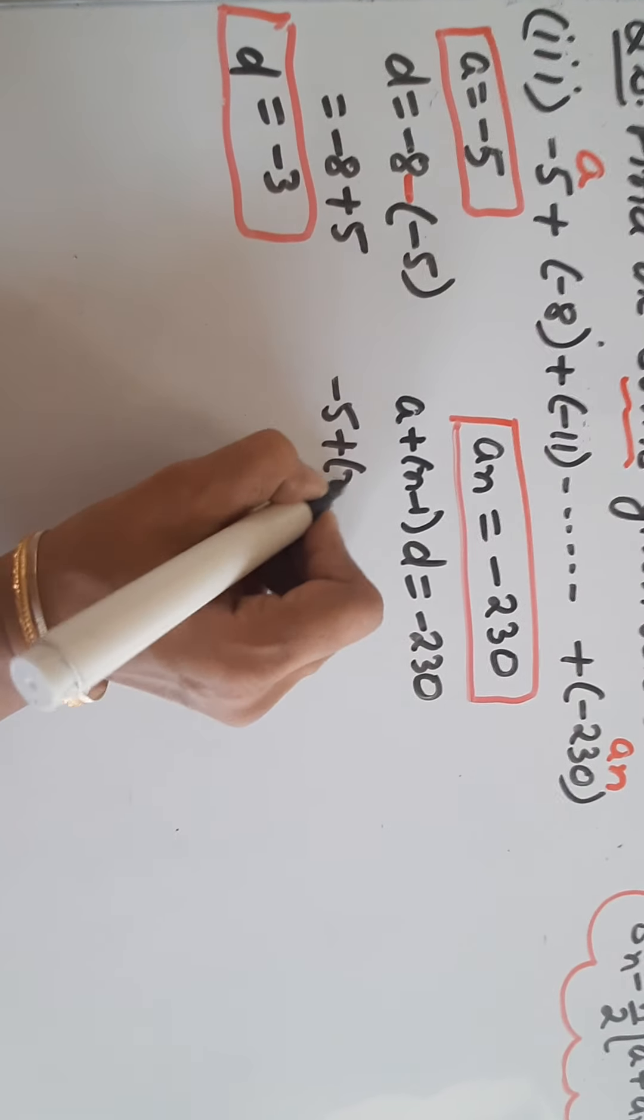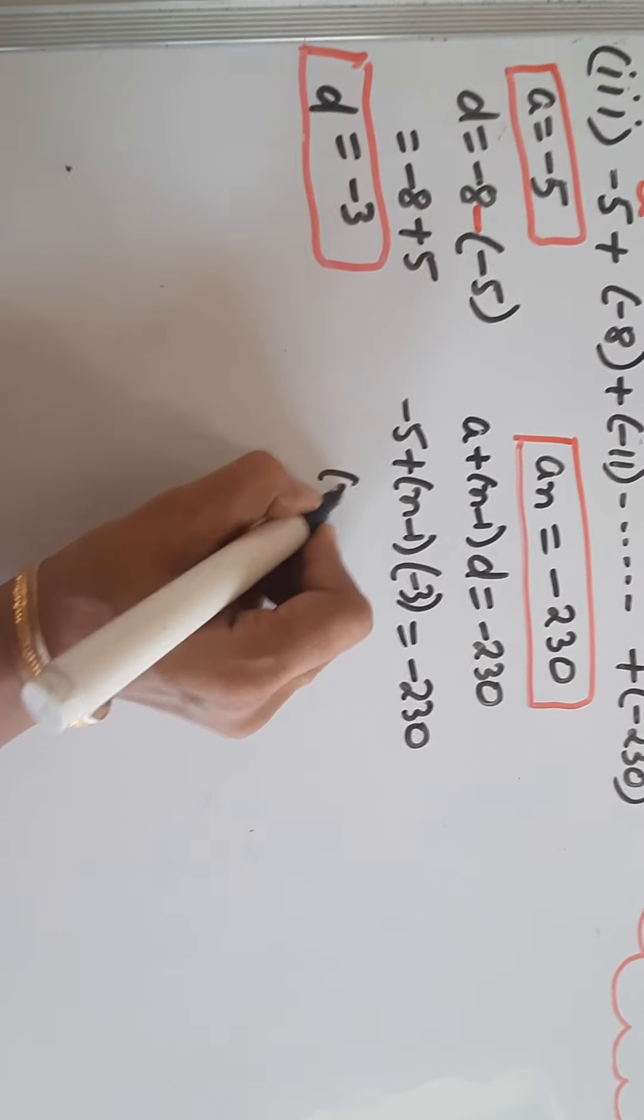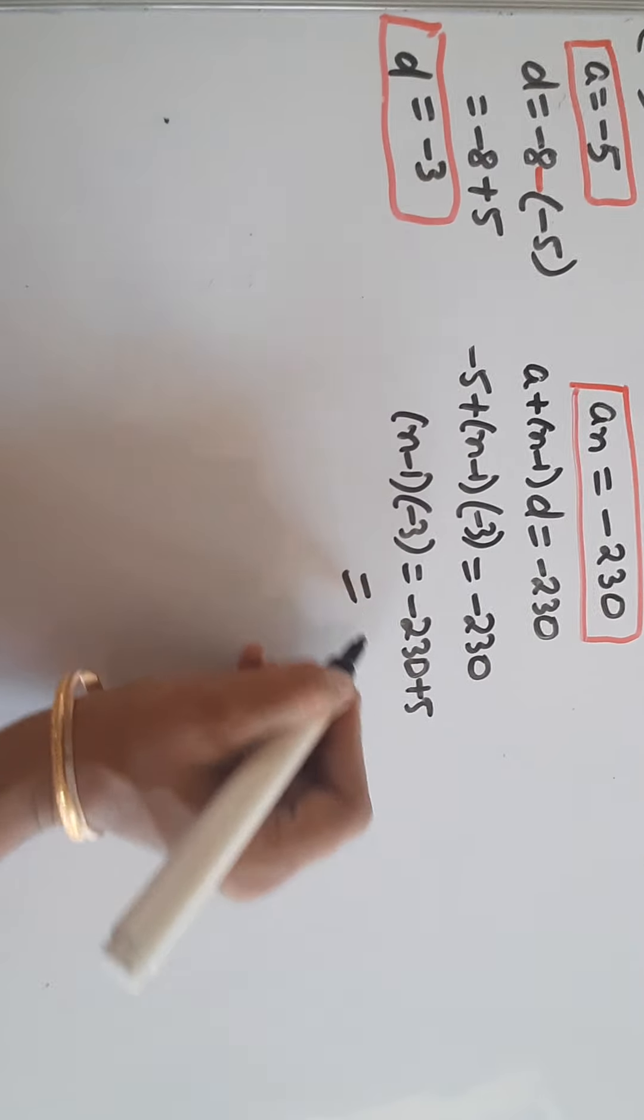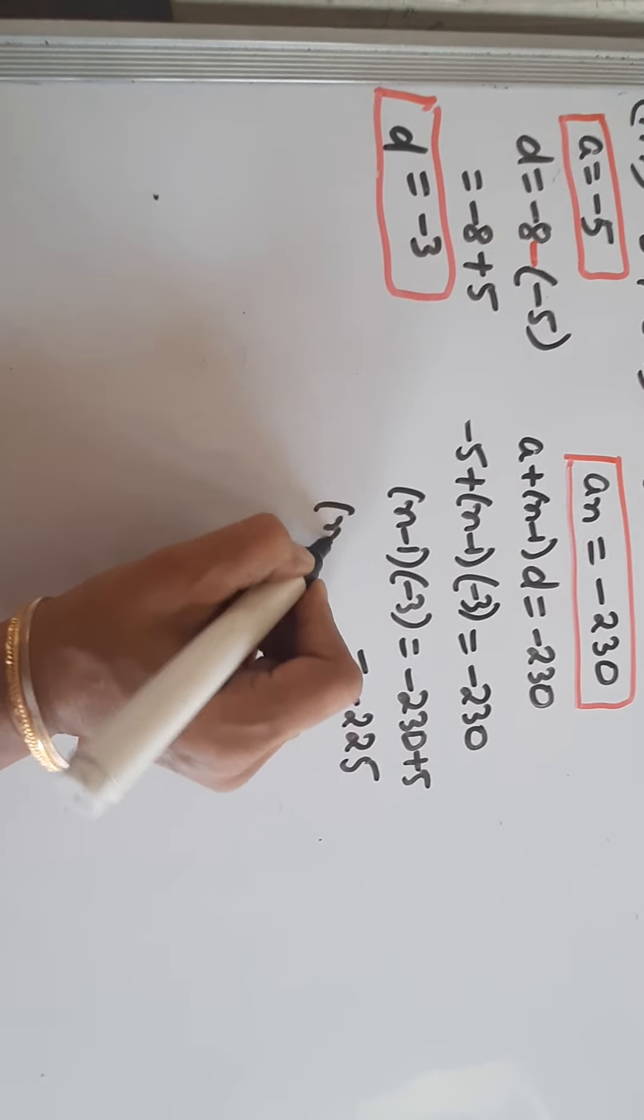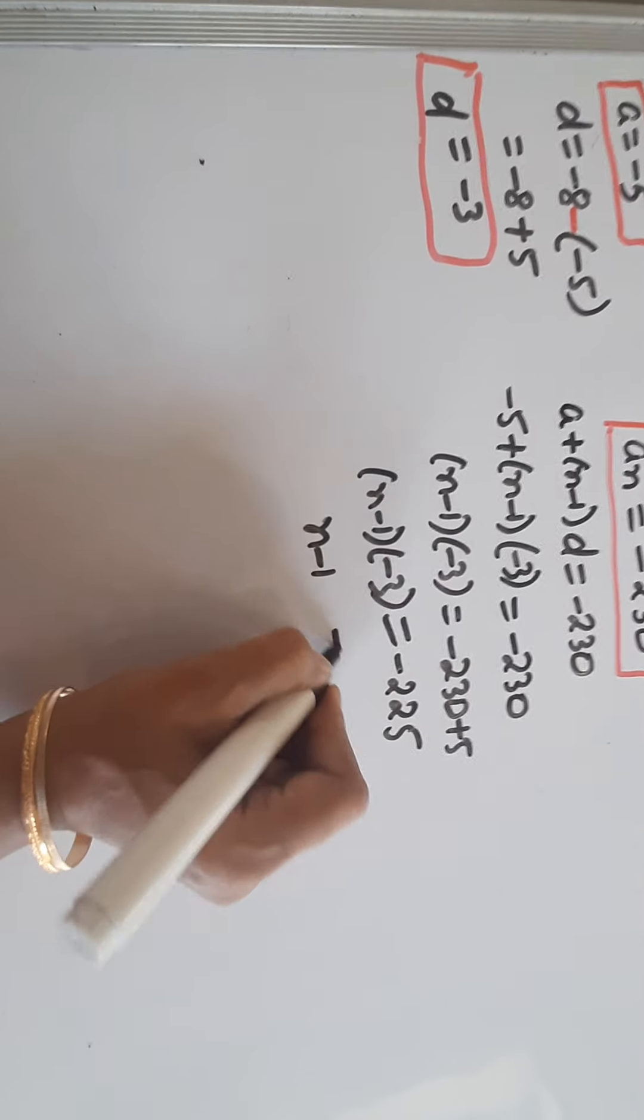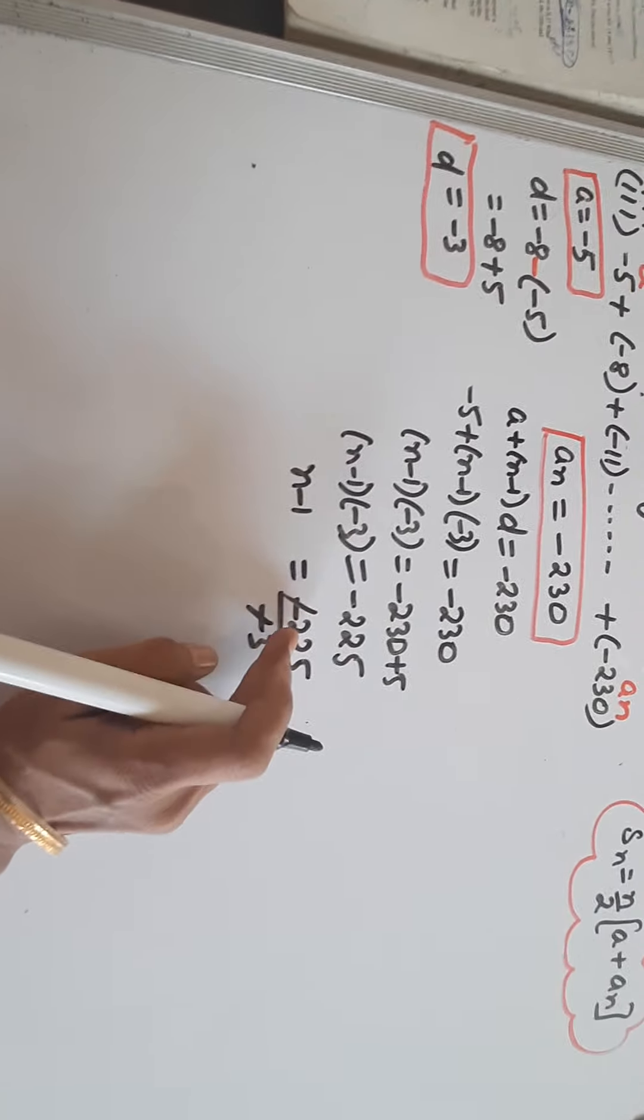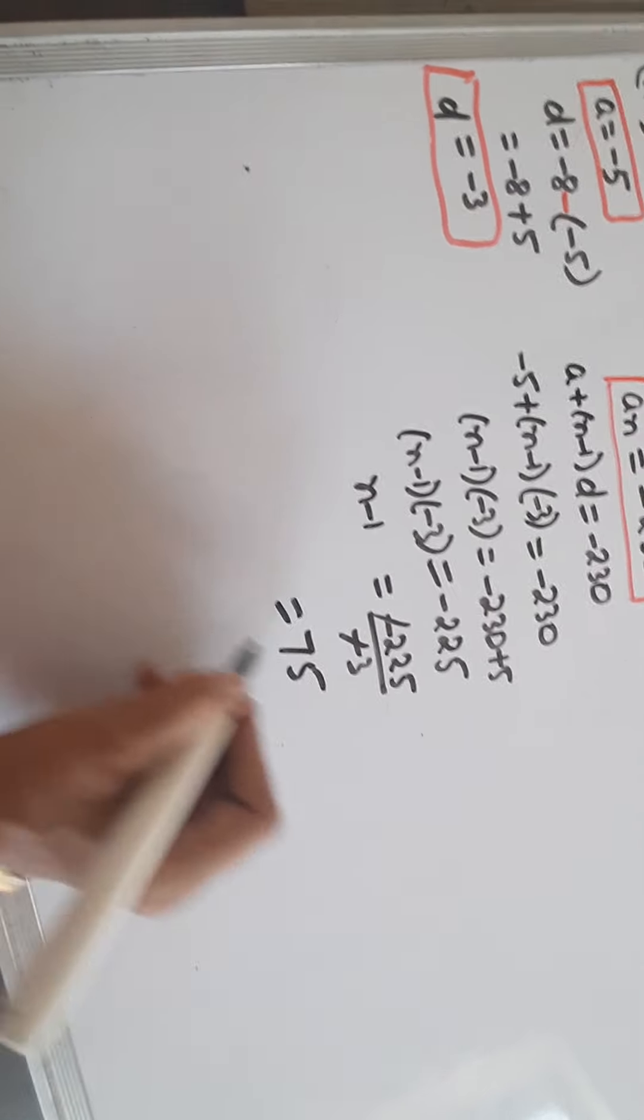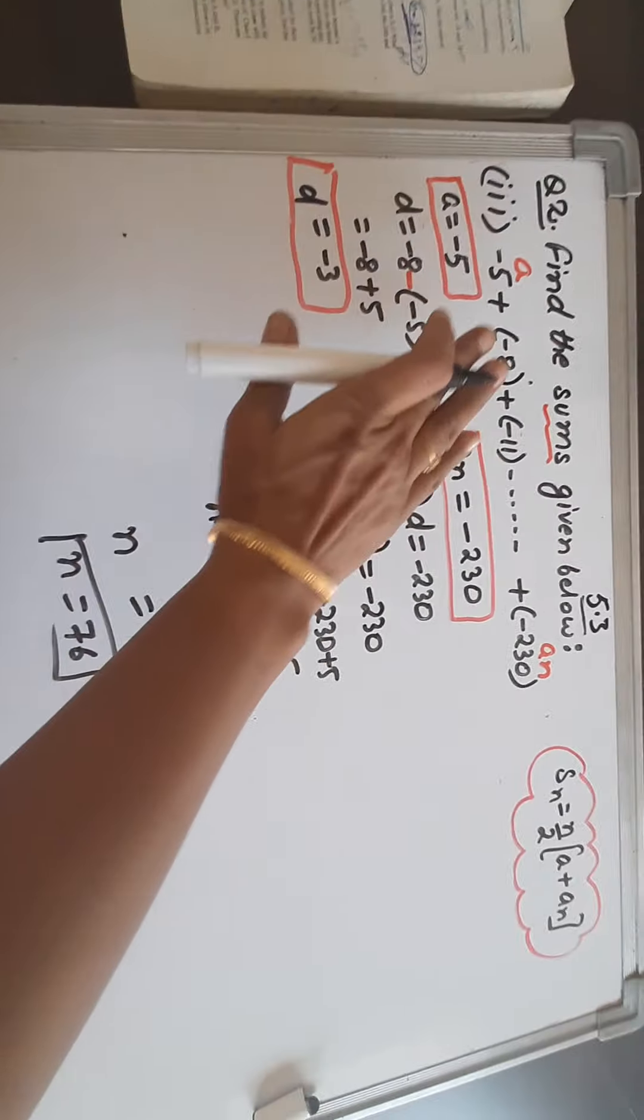A is minus 5 plus N minus 1 into D is minus 3 equals minus 230. Solving this, minus 5 goes to the other side as plus 5. So we get minus 225 equals N minus 1 into minus 3. Minus 3 is multiplying, so when it goes to other side it gets divided. The sum of all 3 digits is 9, that means it is divisible by 3. So 225 divided by 3 is 75. And minus 1 goes to other side as plus 1, so N equals 76. We have 76 terms in this AP.